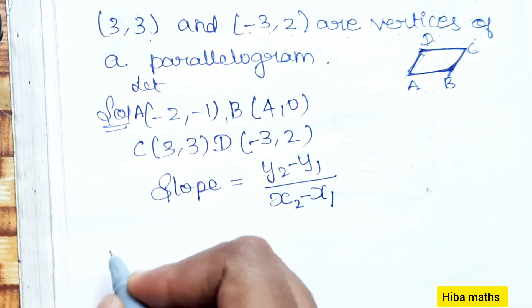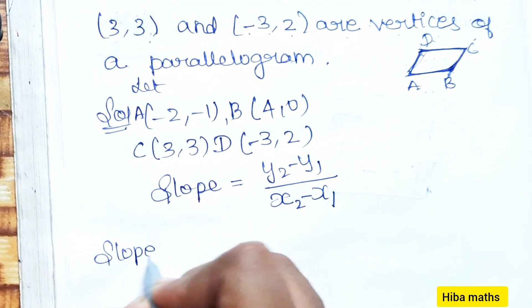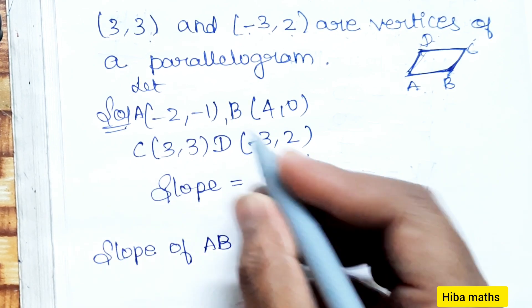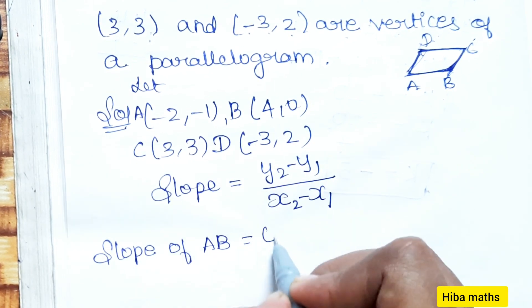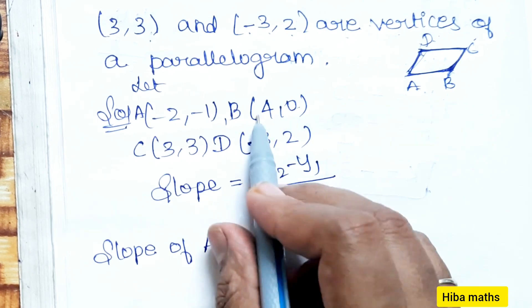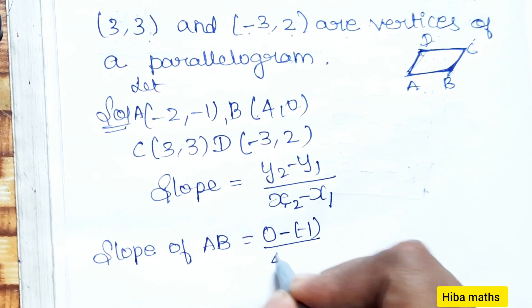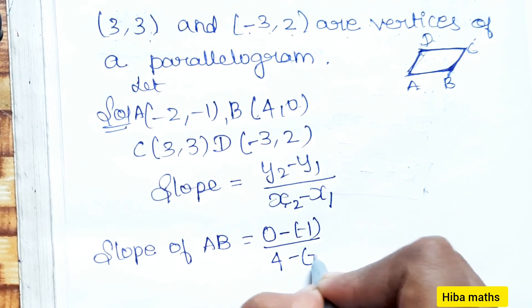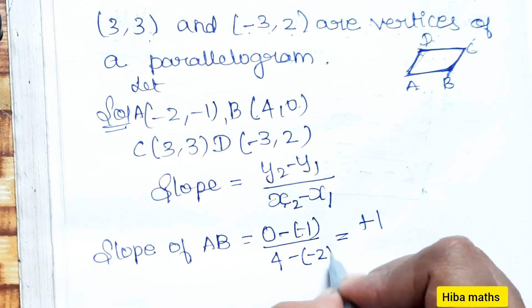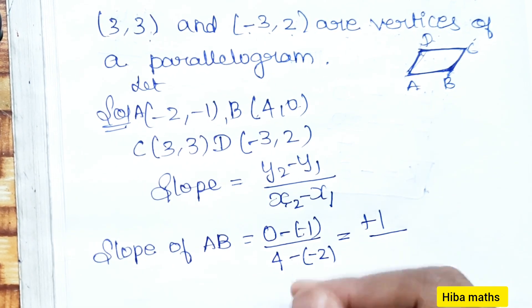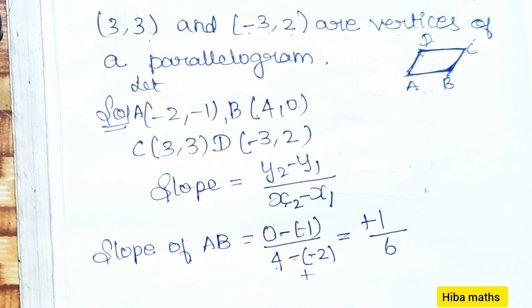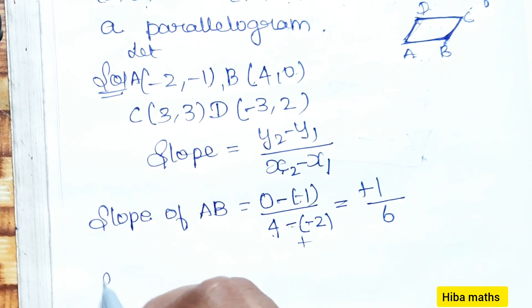First, slope of AB: y2 - y1 = 0 - (-1) = 1, x2 - x1 = 4 - (-2) = 6. So slope of AB = 1/6.